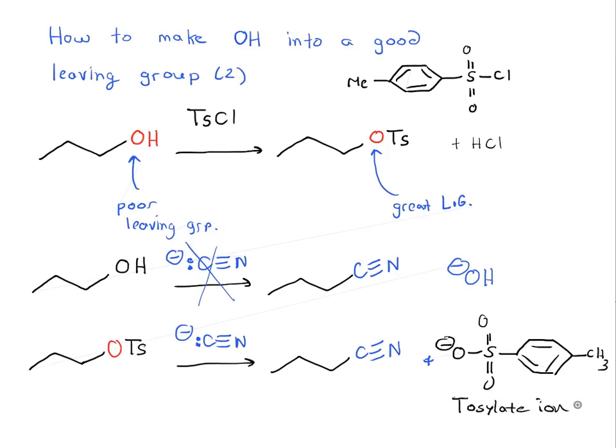And so, this allows us to start with an alcohol, turn it into a tosylate, and from here, we can treat this tosylate with a lot of different nucleophiles to give us a large variety of different products.